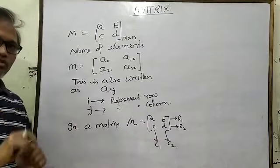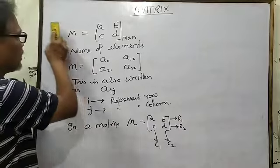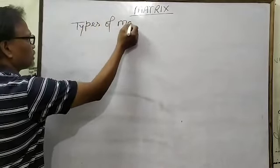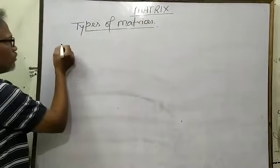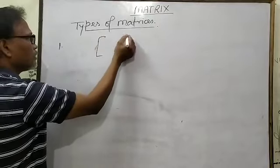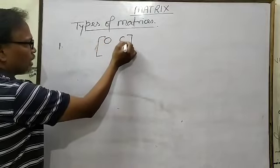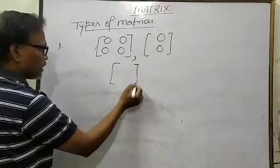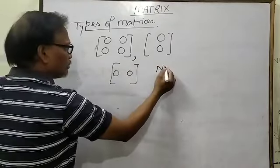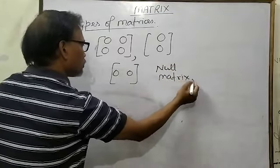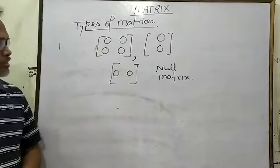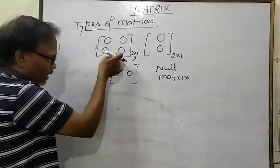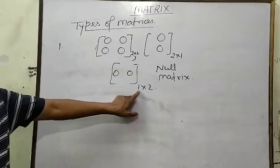There is not only the 2 cross 2 matrix — there are different types of matrix. The first type is the null matrix. A null matrix means that all the elements of the matrix are zero. These are examples of null matrices. Their orders can be 2 cross 2, 2 cross 1, or 1 cross 2. We always write the number of rows first, then the number of columns.